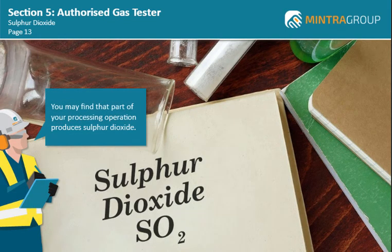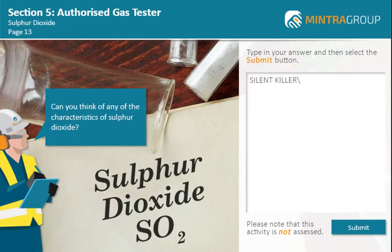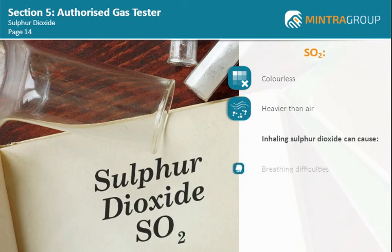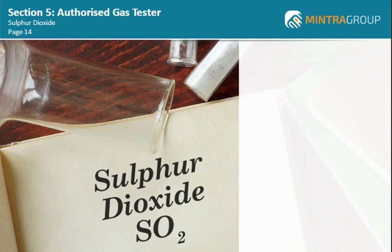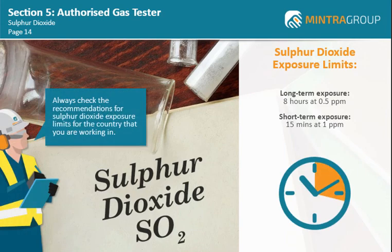You may find that part of your processing operation produces sulfur dioxide. Sulfur dioxide is a colourless gas which is heavier than air. Inhaling sulfur dioxide can cause breathing difficulties, respiratory disease and in high levels death. As a general rule of thumb, the long-term exposure limit for sulfur dioxide is 8 hours at 0.5 ppm, and the short-term exposure limit is 15 minutes at 1 ppm. Always check the recommendations for sulfur dioxide exposure limits for the country that you are working in.